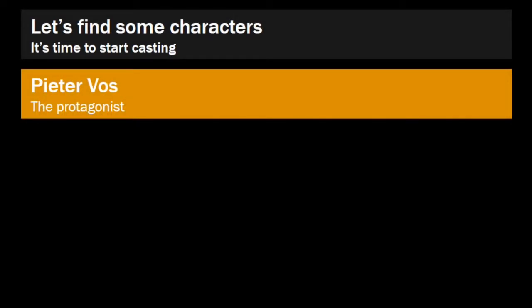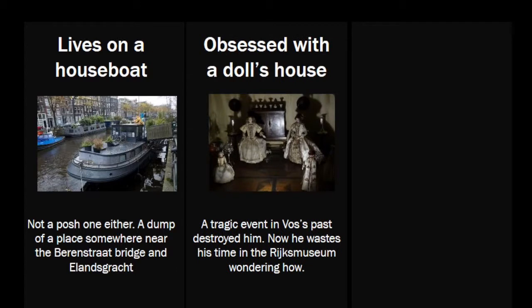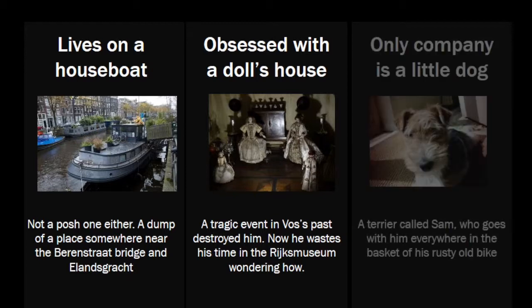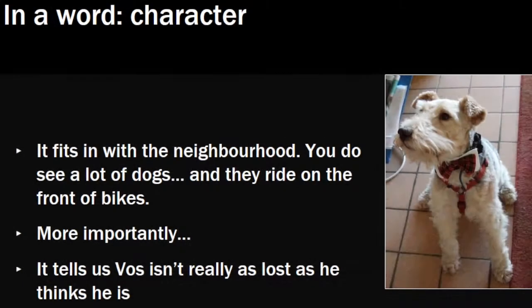From that very first time I visited Ellensgracht, I had a picture in my head of a man — a lost man, living in a boat on the canal. He's got a name now: Peter Voss. Voss is Dutch for fox — this is not insignificant. The boat, like his life, is a mess. A tragic event in Voss's past has destroyed him, something that is connected to a historic doll's house. And his only company is a little wire fox terrier called Sam. Why the dog? Because you see a lot of dogs in the area, and some of them do ride in the baskets of their owners' bikes. More importantly, Sam tells us that Voss isn't really as lost as he thinks he is, because lost people wouldn't keep a dog like him.